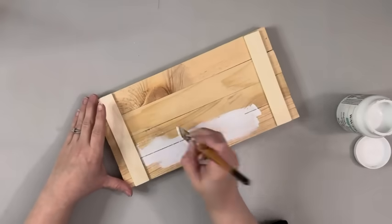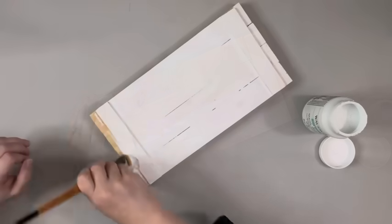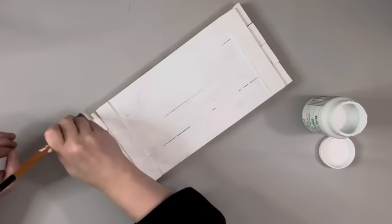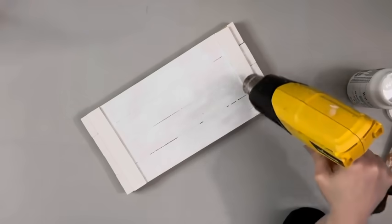Next, I took Snow White Chalk Paint by Waverly. I gave the top and all of the edges two coats. And then on the bottom, I am just painting the border of it because the rest of it will be covered.